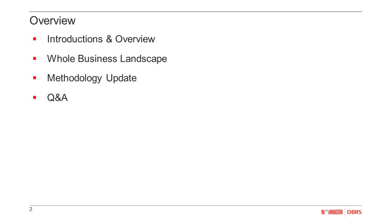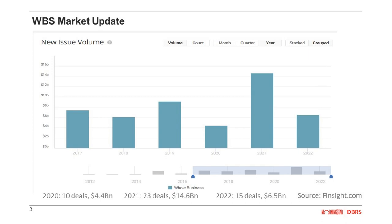Sure. Maybe we take a step back first and briefly describe what whole business securitizations are. Whole business securitizations are securitizations of operating assets in which the sponsor — typically the operating company or parent company — contributes largely all of its predominantly top-line franchise or license-based revenue generating assets, including trademarks, patents, and software — basically all the intellectual property necessary to operate the network.